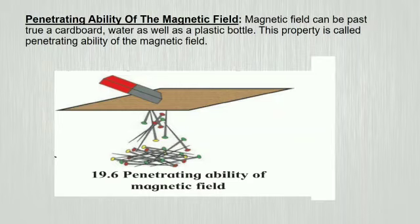From observation, we see that a magnetic field can pass through a cardboard, a bottle of water. In each case, the intensity of magnetic field is found to decrease.